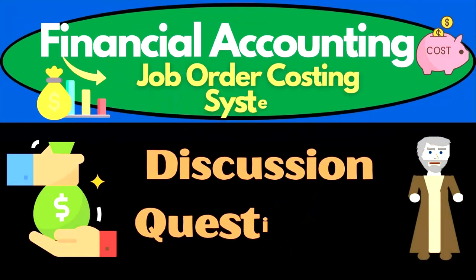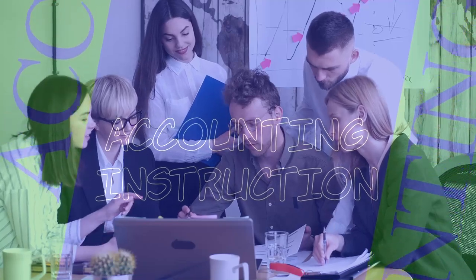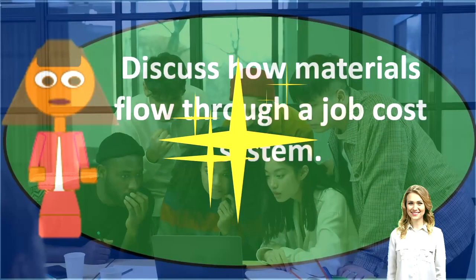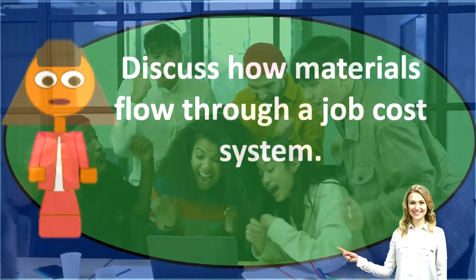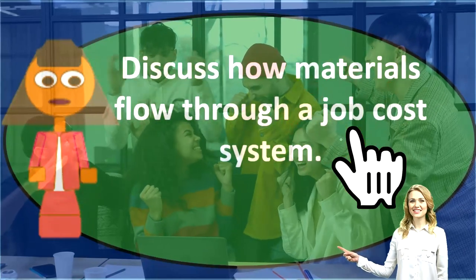In this discussion, we will discuss the discussion question: Discuss how materials flow through a job cost system. So if we see a discussion question like this, we can first think that we are considering a job cost system.